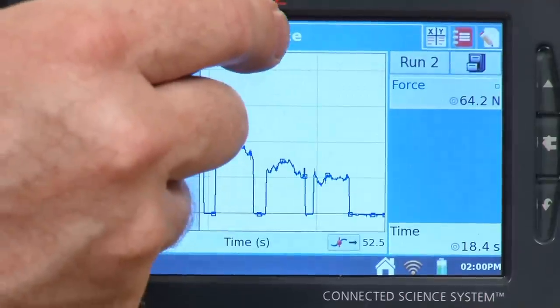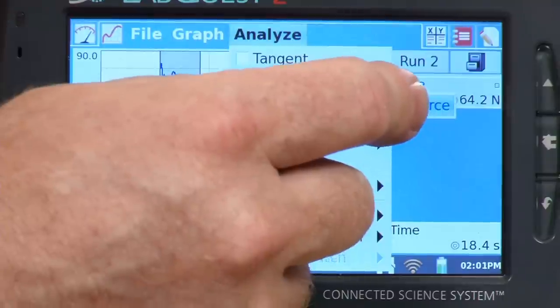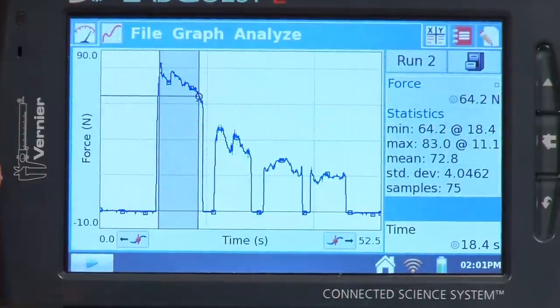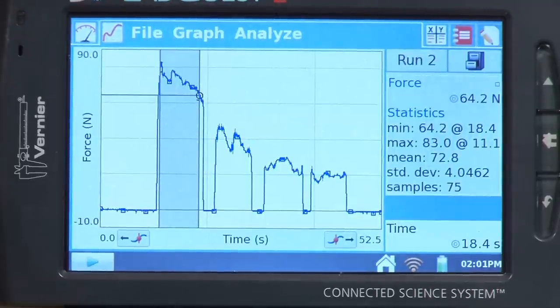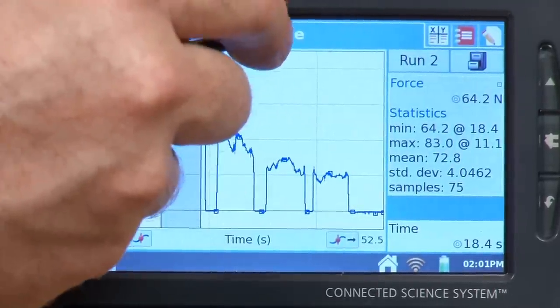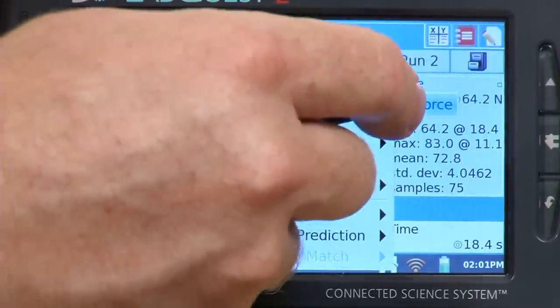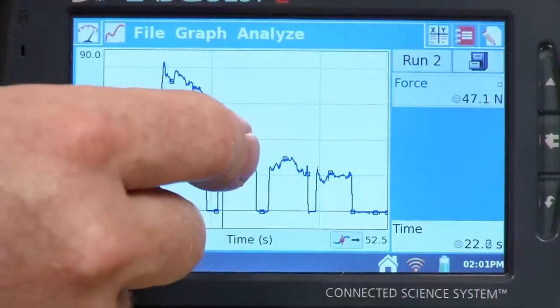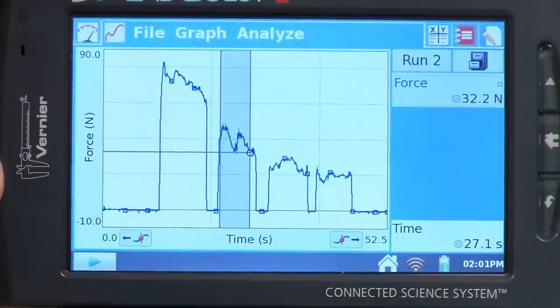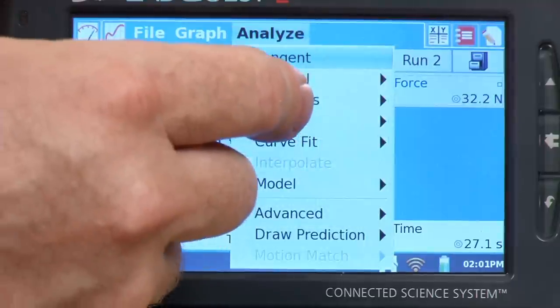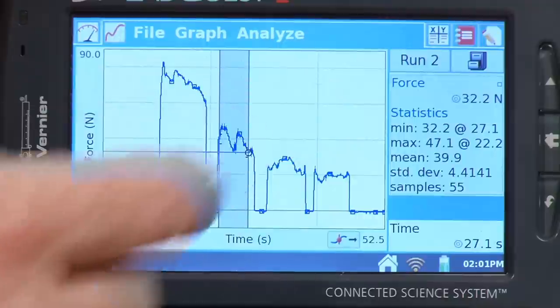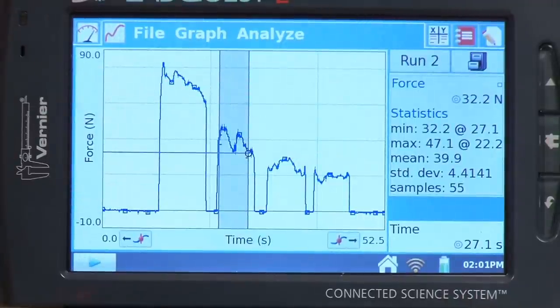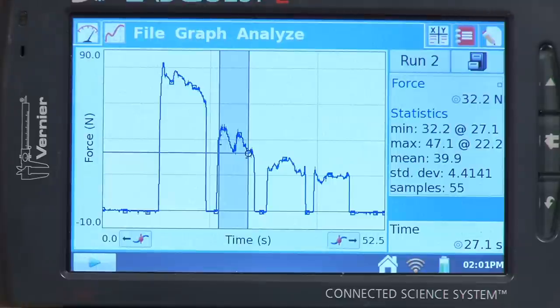So what I can do is I could come in here and highlight this region of the graph. And if I go up now and do analyze, I could go and do the stats and get the mean force for that finger. It would be 72.8 Newtons for my pointer finger there. If I wanted to do the other ones, I would go here and turn off the stats there. And then I can come over here and I can tap and drag over that finger and go and do the stats again. And for this one, I end up with 39.9 for my mean. And I could continue to do this for the rest of the fingers.